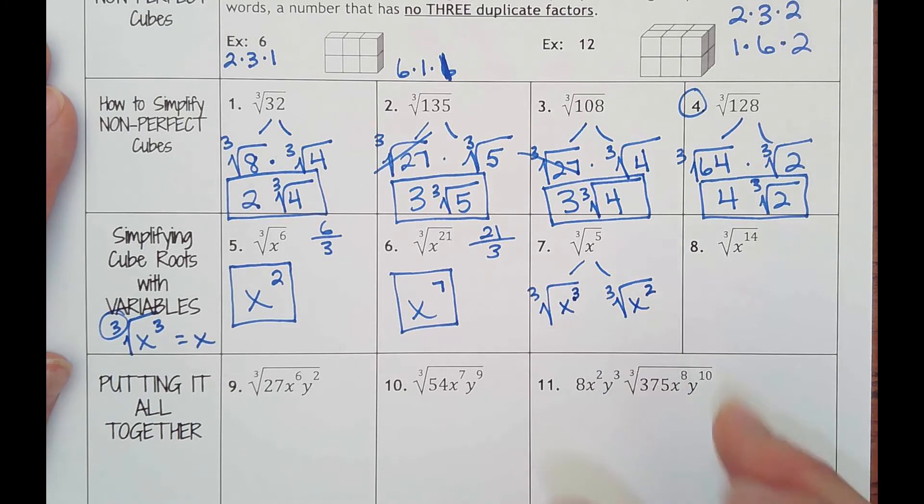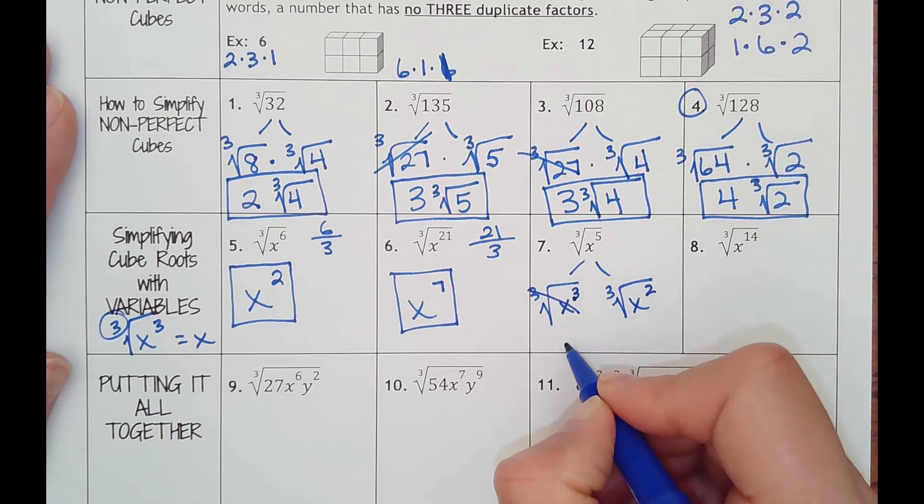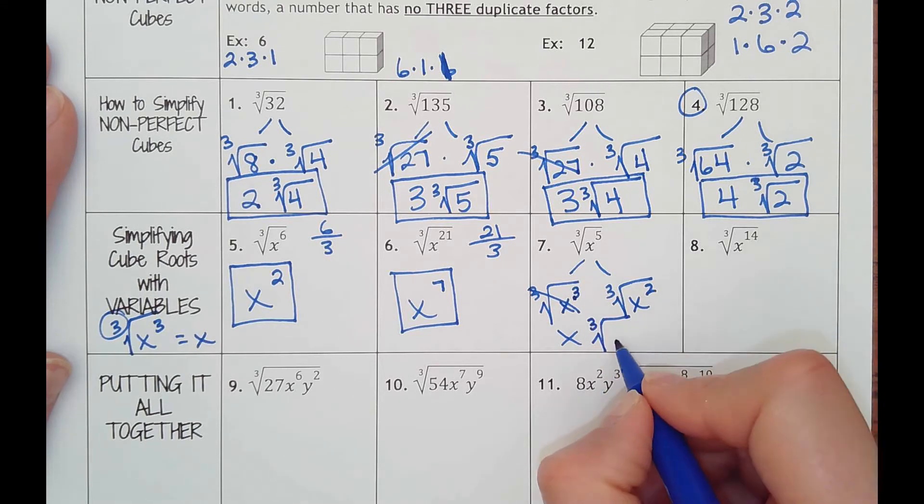That would be three of the five, and then I would have x squared left over. These would make x to the fifth total. I'm just rewriting it. And then this would cancel to make x cube root of x squared.